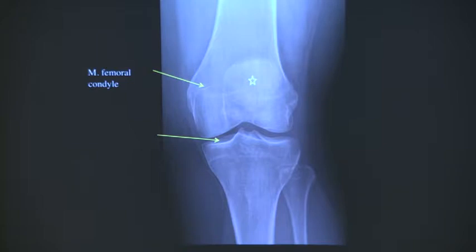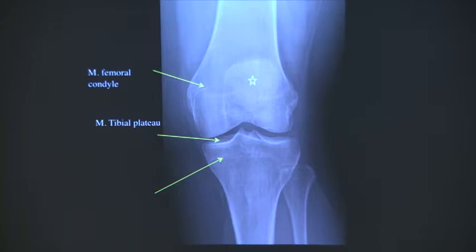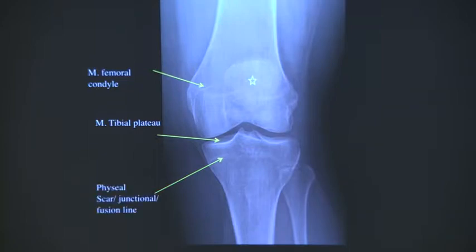That's the medial tibial plateau. What is this here - the white line? Is it open? I see this when it is open. How do you call it? The scar - that's it, the fascial scar. Very good.